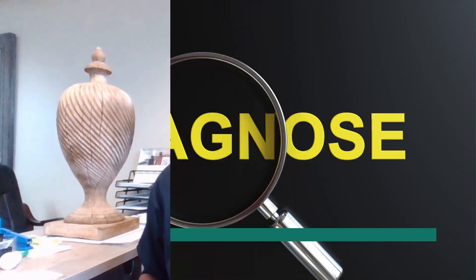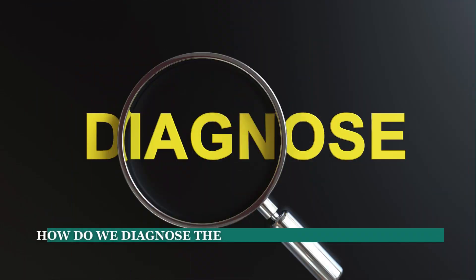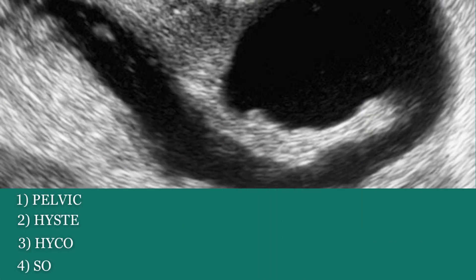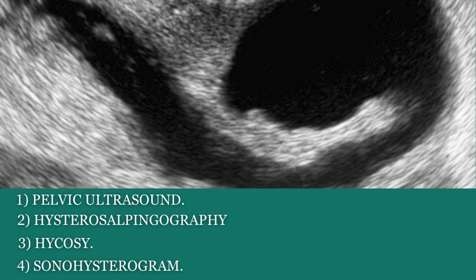How do we diagnose blockage of the fallopian tubes? An ultrasound can be used to actually see the tubes, especially if they have fluid. When fluid is seen in the tubes or in the adnexa, we know that the patient has hydrosalpinx. It can be unilateral — meaning one side — or both tubes can be filled with fluid and both not functioning.